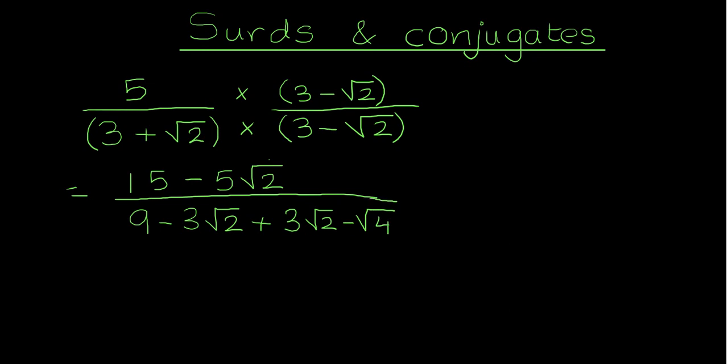Remember, the negative sign will be outside the bracket. So we can carry on. The numerator, no changes yet, 15 minus 5 root 2 over—now interesting things over here. Minus 3 root 2 and the plus 3 root 2 cancel out. So my denominator will be 9 minus, and the square root of 4 is 2. So my final answer will be 15 minus 5 root 2 over 7.